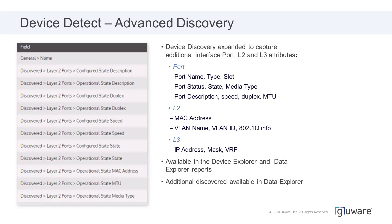One of the most exciting components of the new Data Explorer is that in the 4.1 release, we've expanded device discovery to capture much more information stored into the database. When you execute a device discovery, Glueware interrogates that device, runs CLI commands, and extracts information into the database. Now we've expanded discovery to capture port information, layer 2 information, and layer 3 information — things like port name, type, slot, media state, operational state, MAC address, VLAN ID, IP address, and much more. This expansion of data provides meaningful information available for you in new reports.